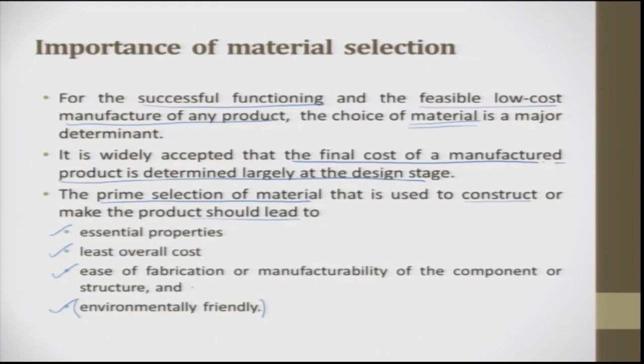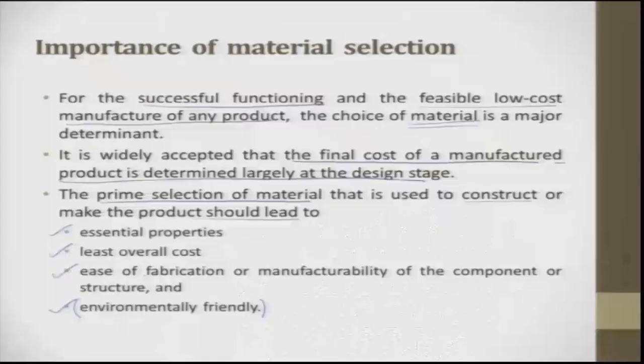Ease in manufacturing is very important. For example, plastic parts are very economical because it is a one-shot process — fabrication is very easy. Whereas with steel, multiple steps have to be done to manufacture a product. These are the prime selection criteria for material construction.